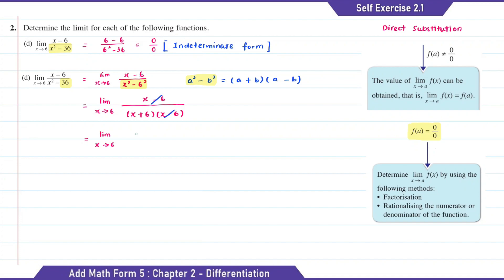Then we're going to get 1 over x plus 6. So now when we substitute x with 6, we're going to get 1 over 6 plus 6, which is equal to 1 over 12.